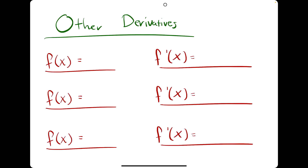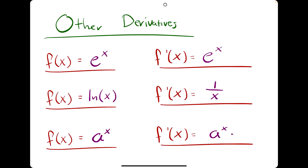That was all the power rule stuff. Here are some other derivatives to memorize. The derivative of e to the x is just e to the x. The derivative of ln of x, or natural log of x, is 1 over x. And the derivative of a to the x is a to the x times the natural log of a. For example, if you see 9 to the x, the derivative will be 9 to the x times the natural log of 9.